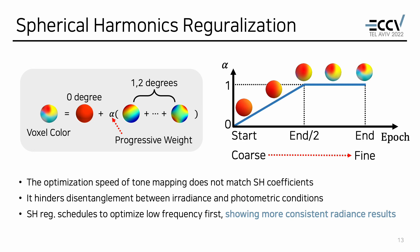We applied additional regularization to stabilize the optimization process. When optimization speed of tone mapping does not match the spherical harmonics coefficients of Planocels, it hinders disentanglement between irradiance and photometric conditions. Spherical harmonics regularization schedules to optimize low frequency first and incrementally weight high frequency, showing more consistent radiance results.